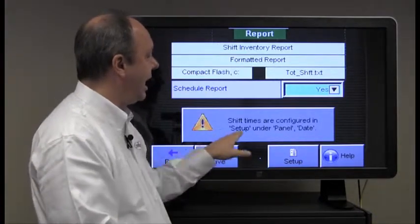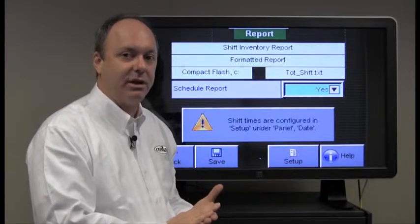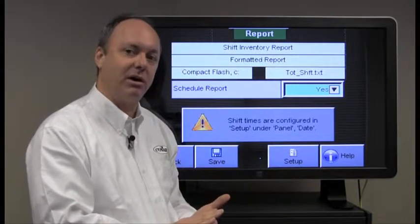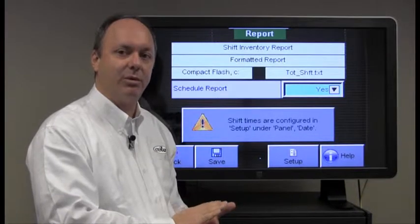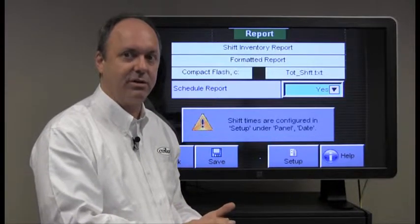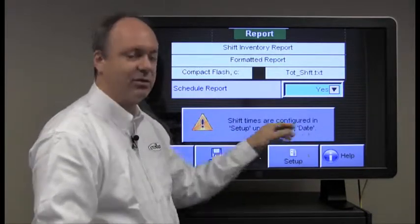If you do not navigate to the screen and set those up, the default is that the shift is 24 hours long. So the shift total would begin at midnight and it would print a report every 24 hours. That's the default. So if you want to change those shift times, you must navigate to the screen and do that.